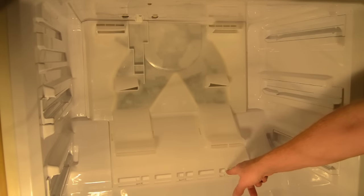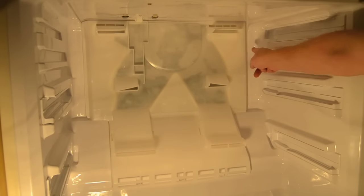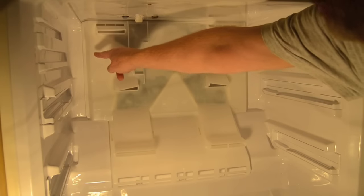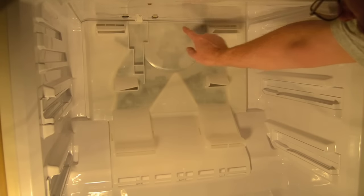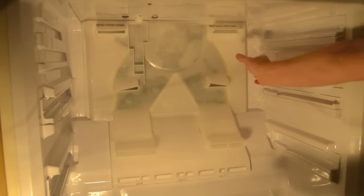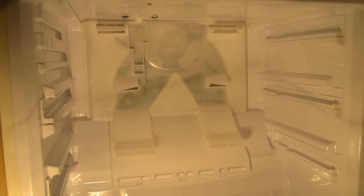To remove the evaporator cover, unlock the tabs, starting with the three tabs on the bottom, then the two on each side, and finally the two on top. Be careful. You don't want to crack the cover or the freezer.